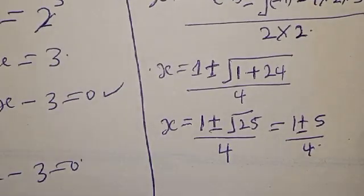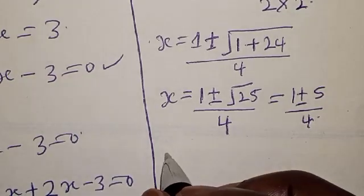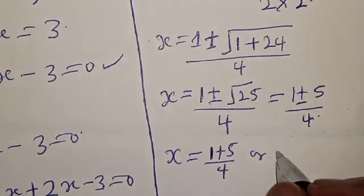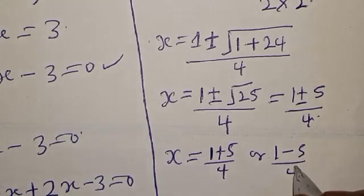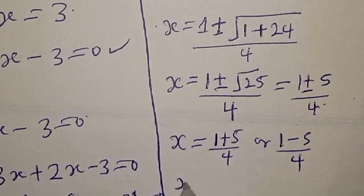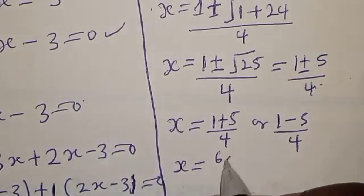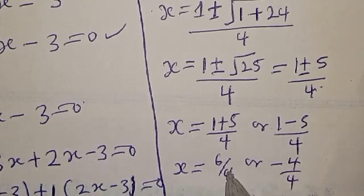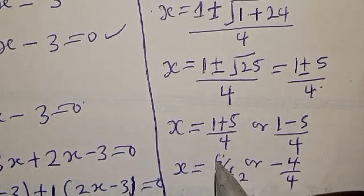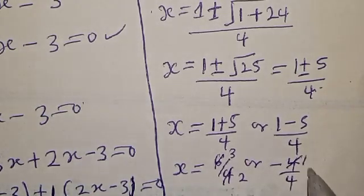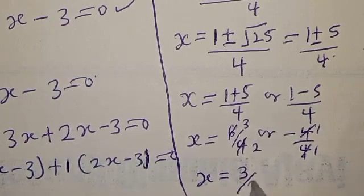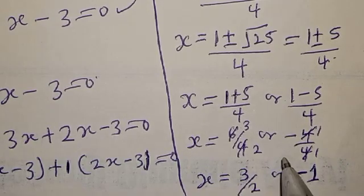Therefore, s equals 1 plus 5 over 4, or 1 minus 5 over 4. That gives s equals 6 over 4, which simplifies to 3 over 2, or minus 4 over 4, which equals minus 1. Therefore, our final answer is s equal to 3 over 2 or minus 1. This confirms our answer using the quadratic general formula.